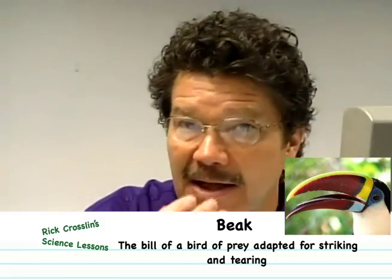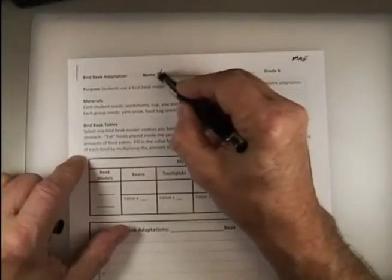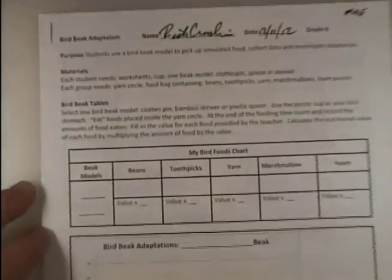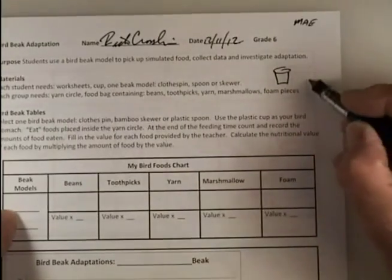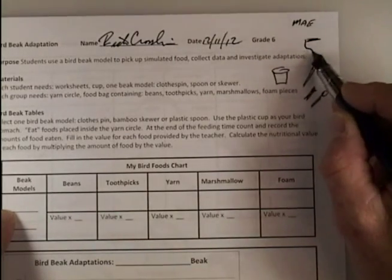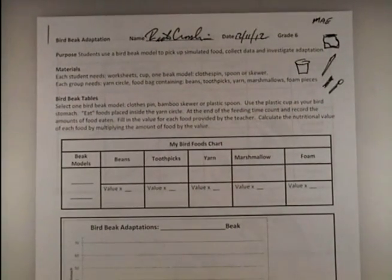Today we're going to play a game to learn more about adaptations — we're going to study birds, specifically one bird part: the beak. The beak is an adaptation made of cartilage, not teeth, because birds don't have teeth, developed over millions of generations. Let's get your worksheet and fill in your name and the date. This activity is a simulation or game to learn how adaptations help birds. Your teacher has already passed out materials: a plastic cup to use as a stomach, a bird beak model — either a skewer, clothespin, or spoon — and a bag of food.